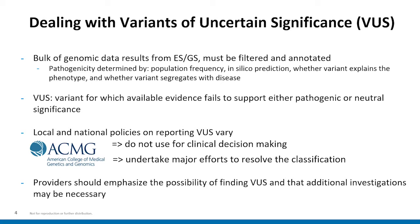With variants of uncertain significance, available evidence fails to significantly support either a pathogenic or neutral significance. Policies on whether or not to disclose VUS to patients are extremely variable — from institution to institution, provider to provider, or even from patient to patient. In the ACMG classification guidelines, it is recommended that VUS not be used for clinical decision-making, and they advise that efforts should be made to resolve classification of VUS to either benign or pathogenic, utilizing segregation analysis in families, functional studies, and data sharing, though there's not a great deal of guidance really beyond that.